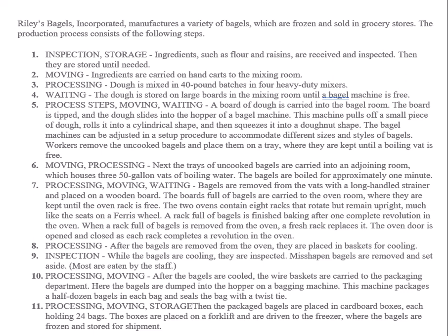Step nine: while the bagels are cooling, they're inspected, and bad ones are eaten by staff. Rather than having staff eat them, there's an opportunity to turn them into bagel pieces or sell faulty bagels at a reduced price — turning an inspection activity into something value-added. Step ten and eleven involve carrying wire baskets and driving forklifts to the freezer — customers don't value that. In this simple operation, activity analysis can reveal ways to reduce non-value-added activities.